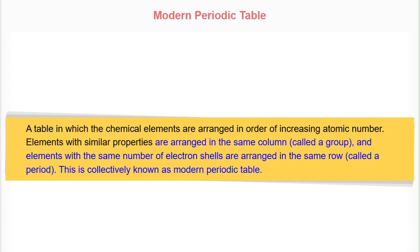Elements with similar properties are arranged in the same column, called a group. And elements with the same number of electron shells are arranged in the same row, called a period. This is collectively known as the modern periodic table.